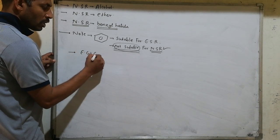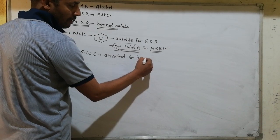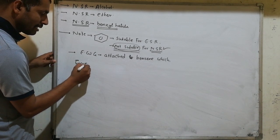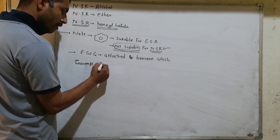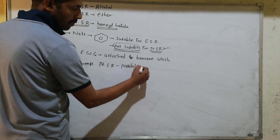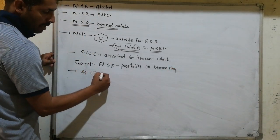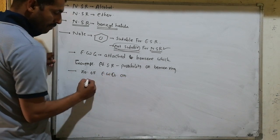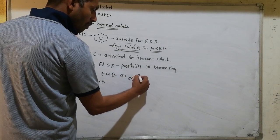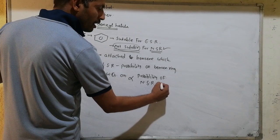When electron withdrawing groups are attached to benzene, they increase the possibility of nucleophilic substitution reaction on the benzene ring. The number of electron withdrawing groups on a benzene ring is directly proportional to the possibility of nucleophilic substitution reaction on benzene.